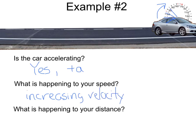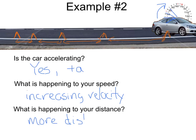What is happening to your distance? If the car was here to start, a second later the car was here, another second later here, another second later here, and the last second the car was here. The distance covered in the first interval was a small amount; the second interval covered more distance; the third interval even more; and the last interval even more. So the distance we cover keeps increasing — we're covering more distance in the same amount of time.